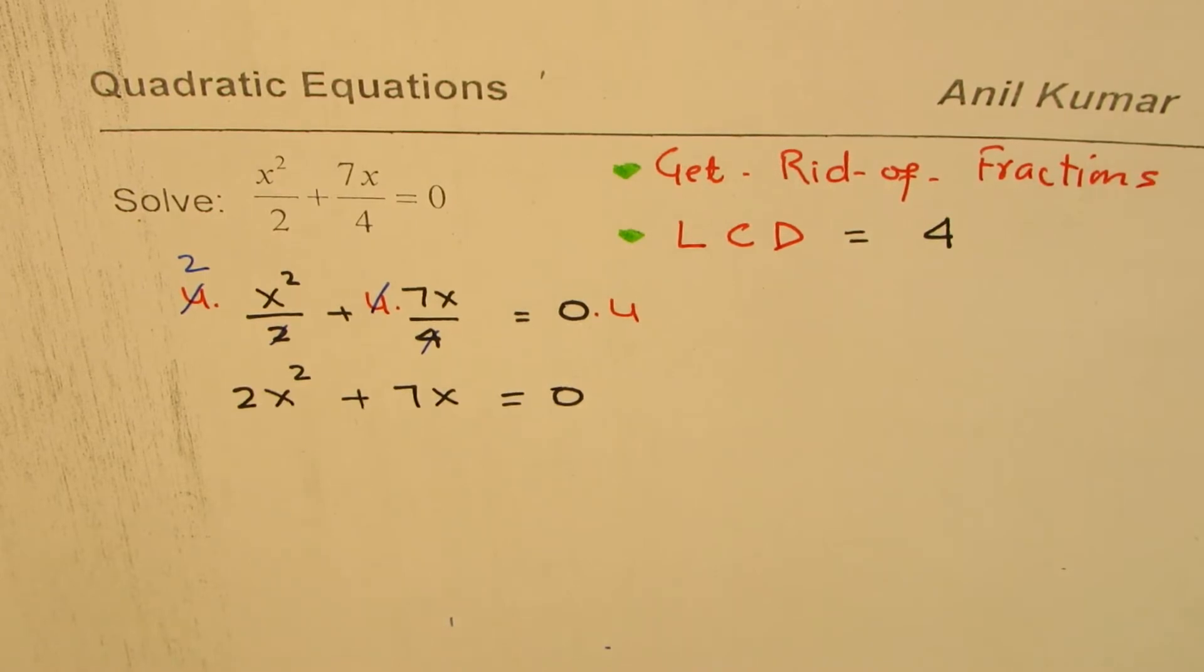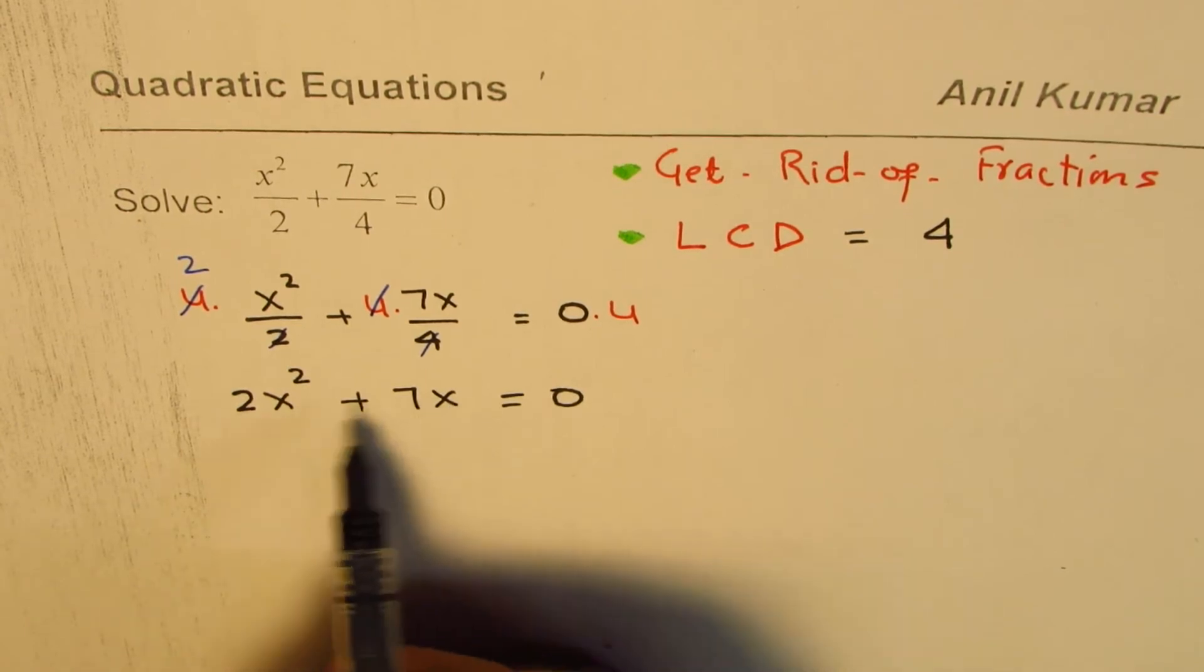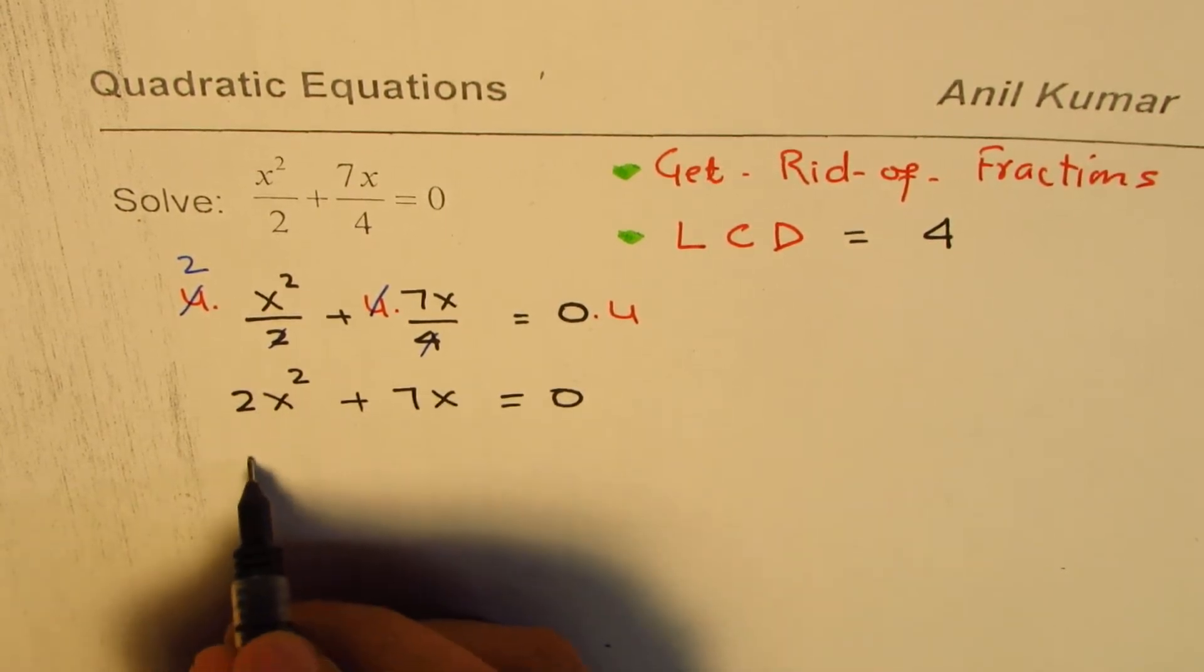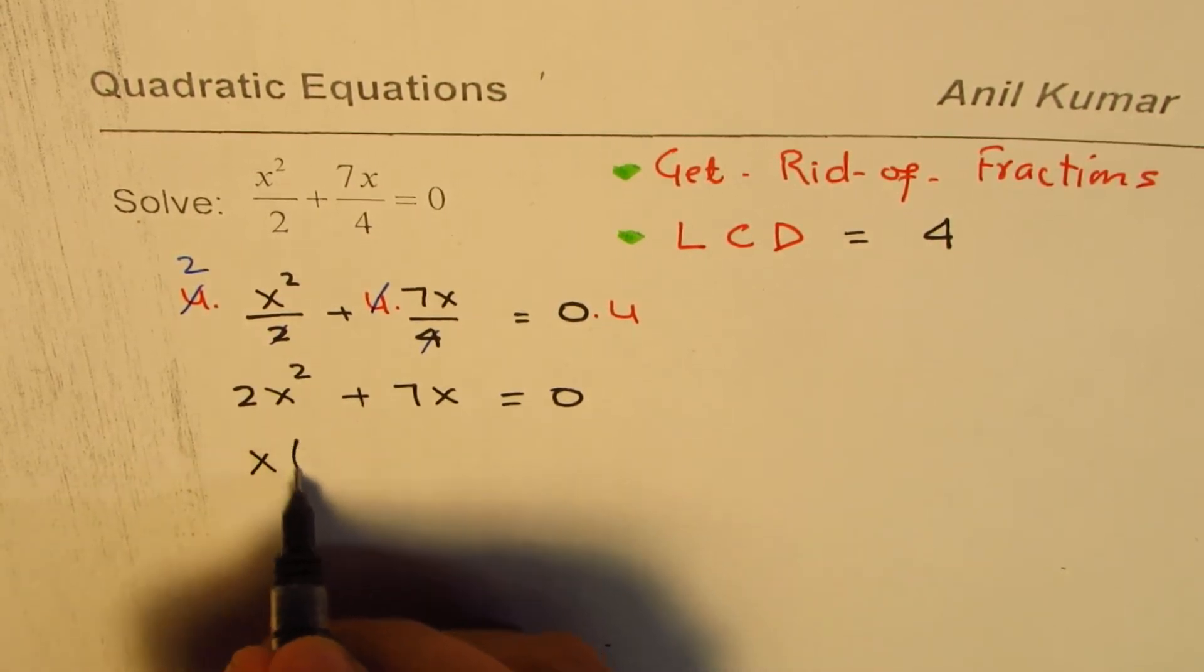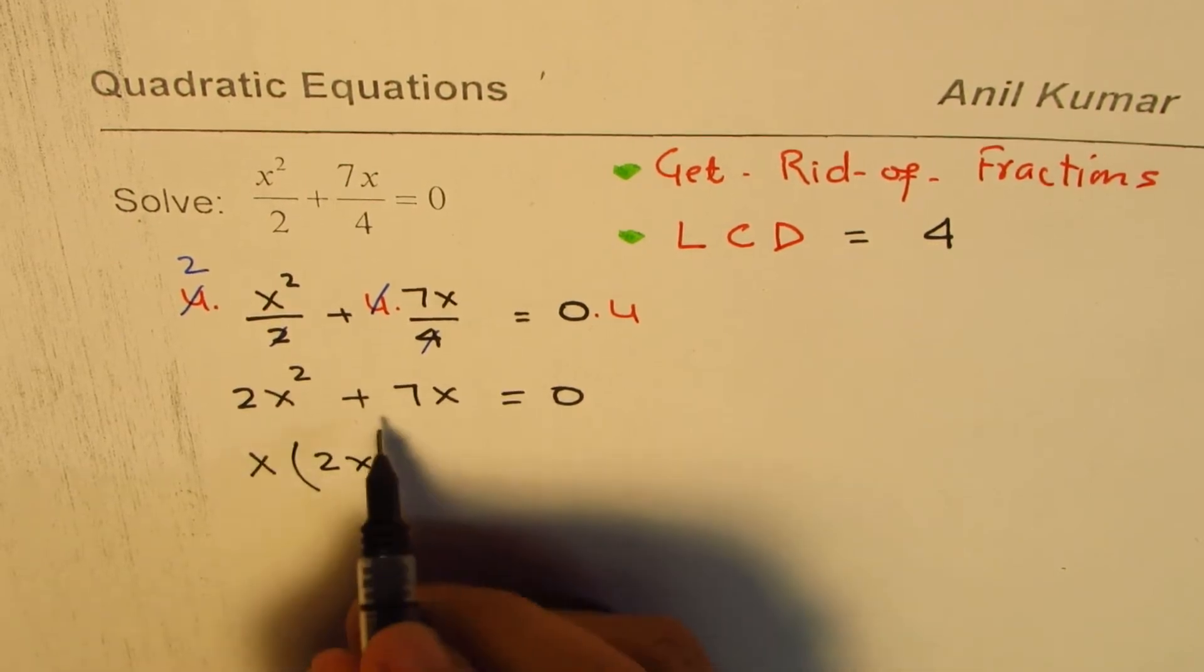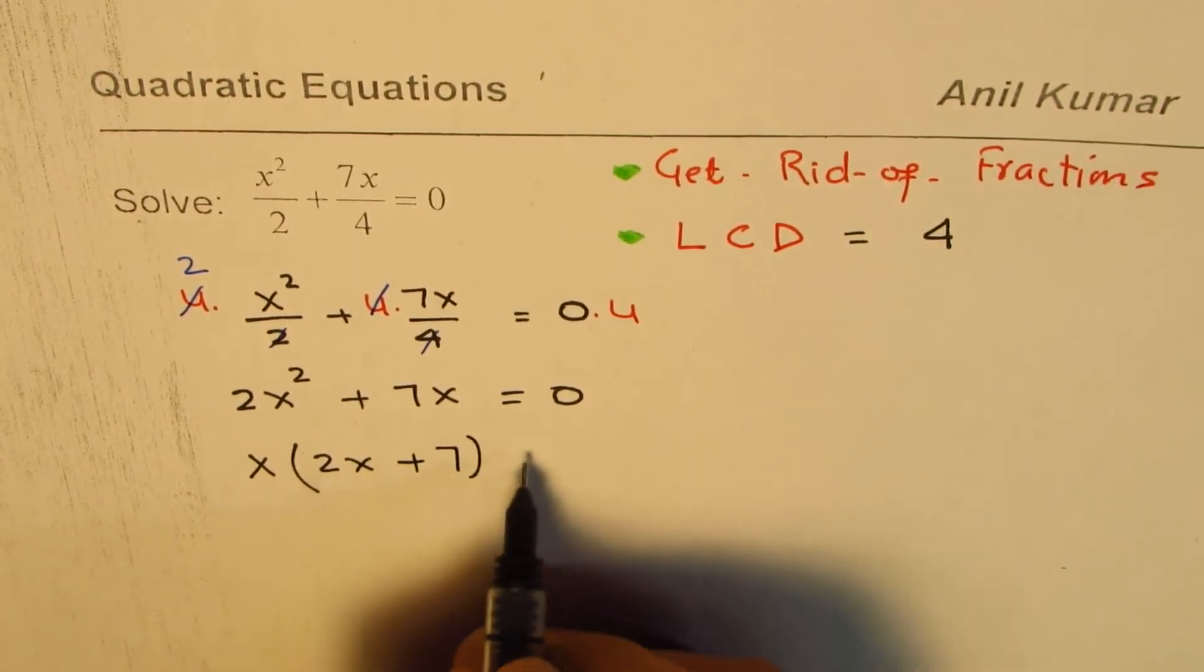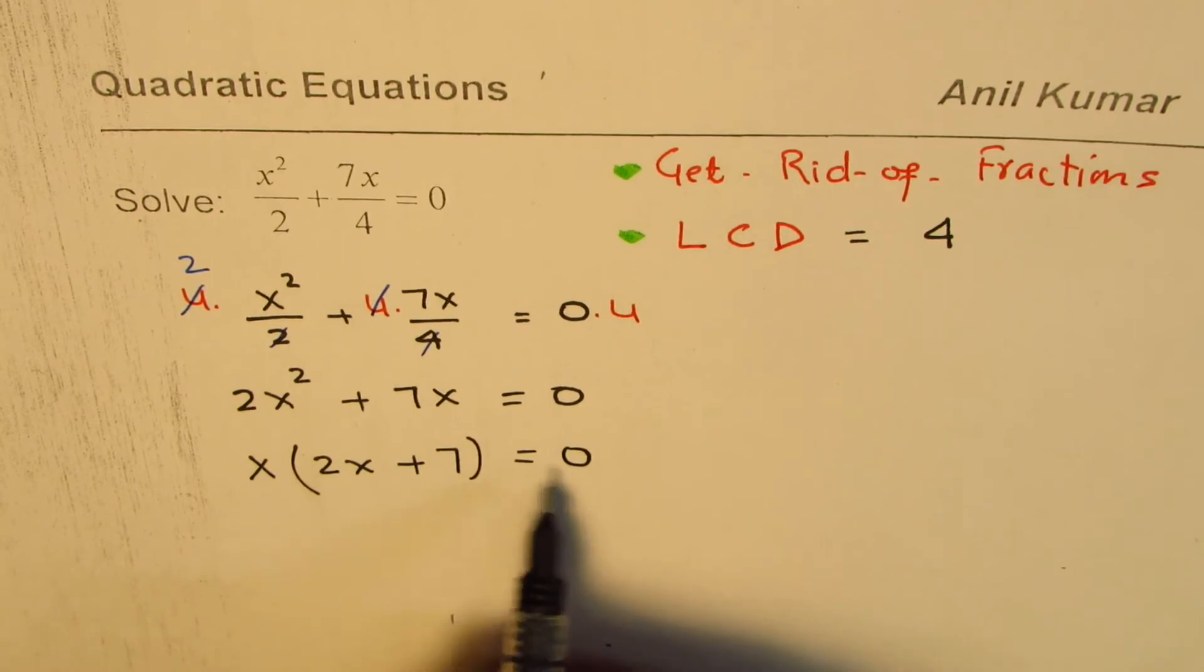Now, it is simpler to solve this equation. One of the ways is we could factor. So if I factor, we get x as a common factor here. We're left with 2x plus 7 equal to 0.